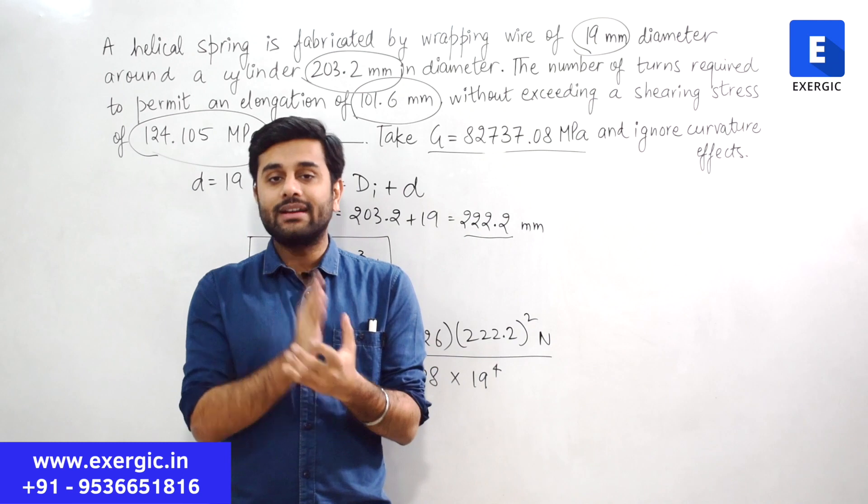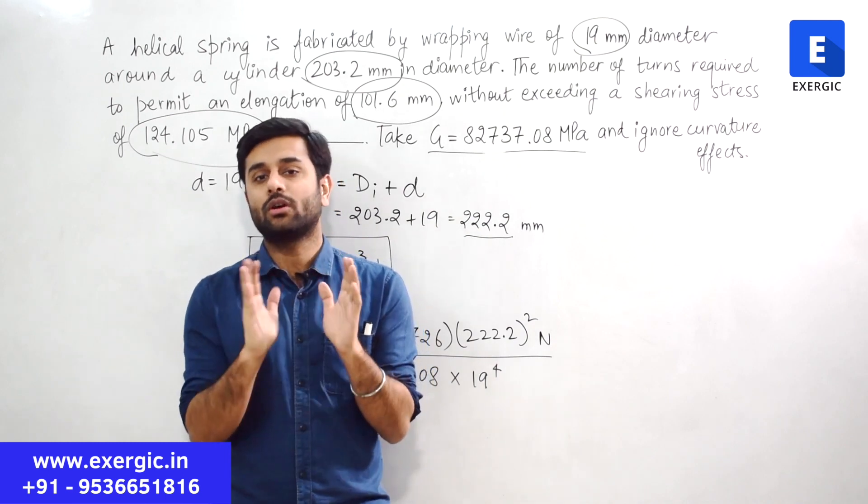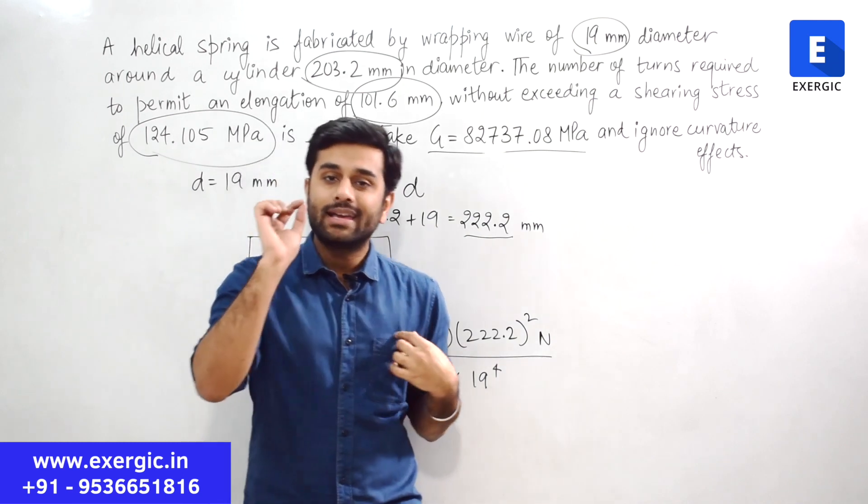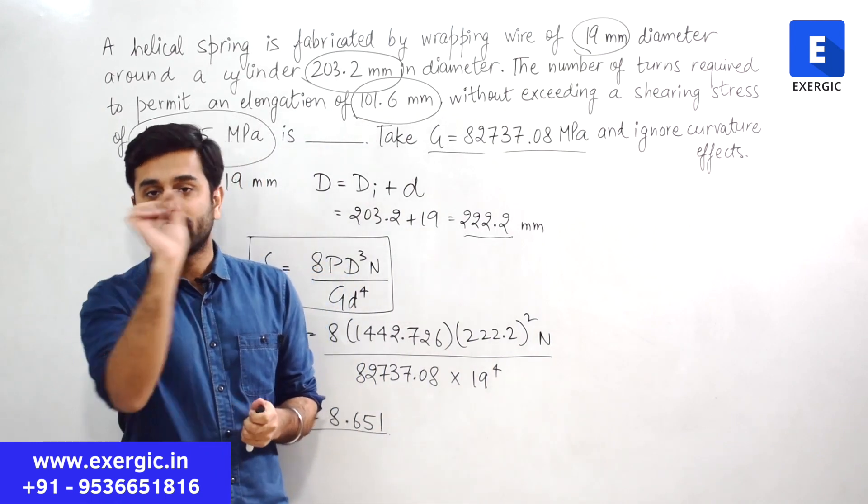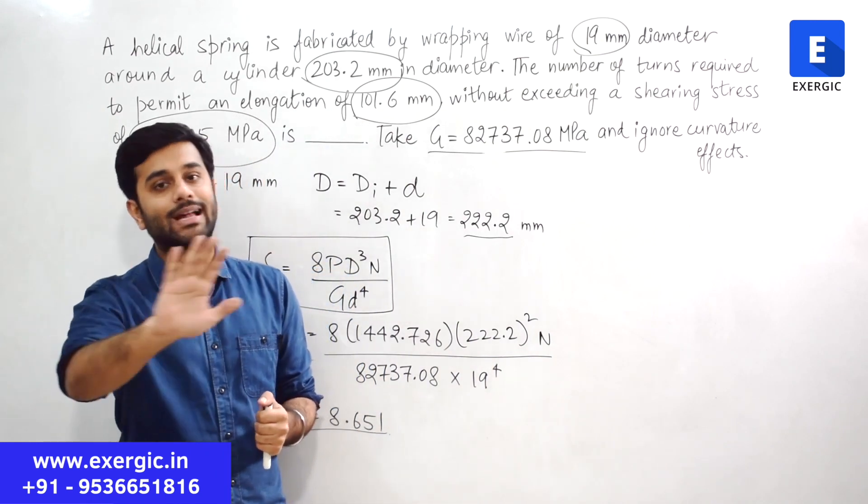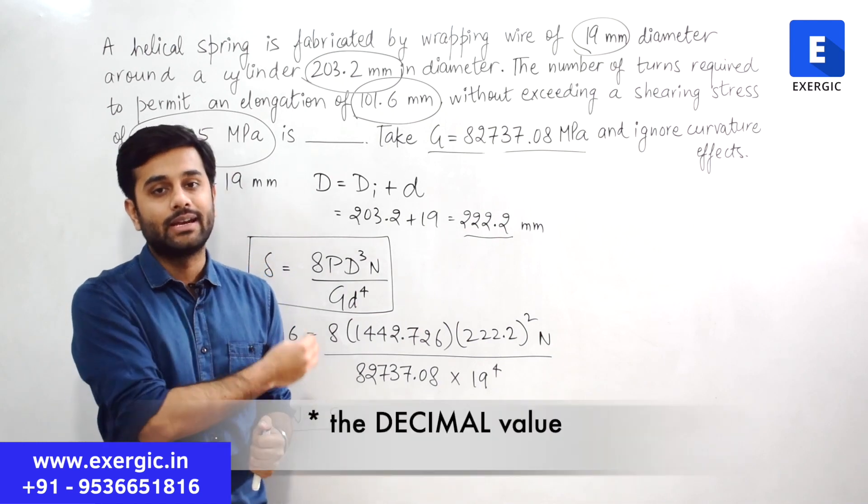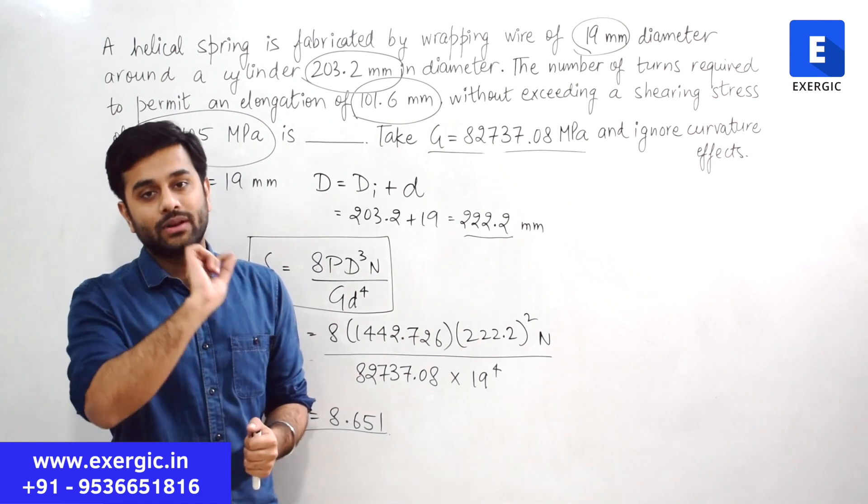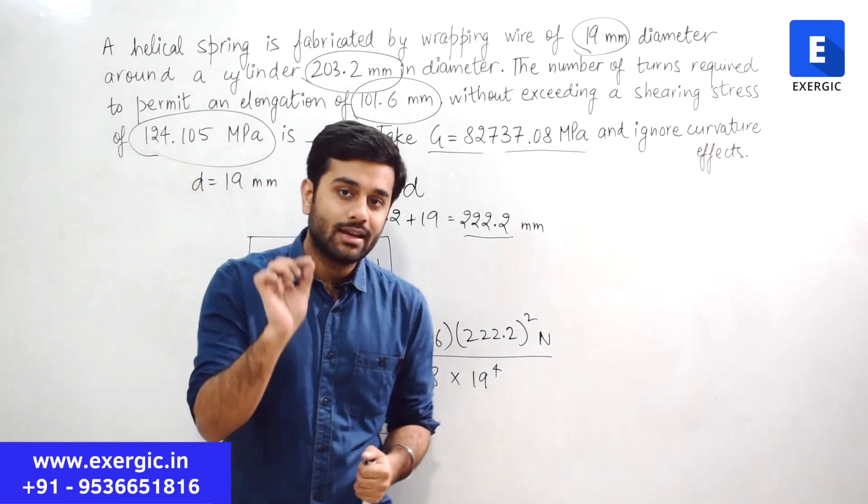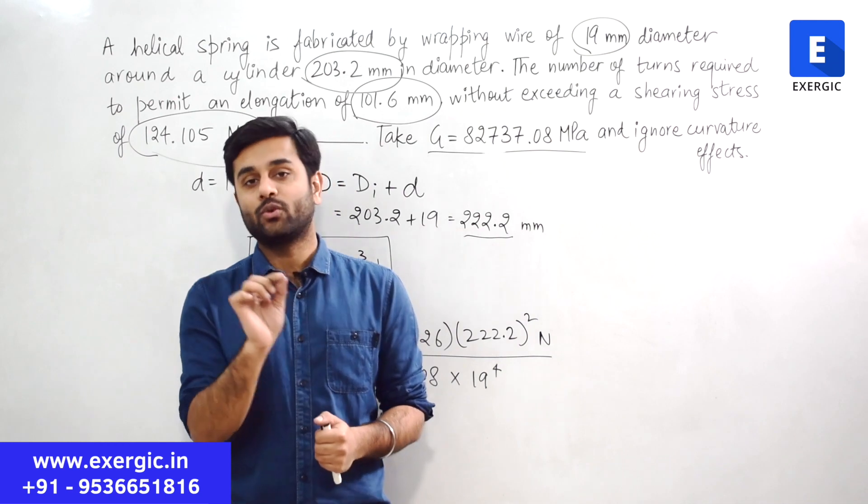But even in that case, whenever you are solving such a question, you get an exact number like 2.5, 8.5, 6.5. Somehow you got that number. Only then consider the decimal value. Otherwise, always consider that if number of turns are asked, they have to be in integer only. Right?